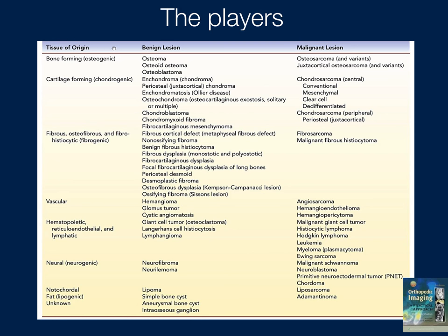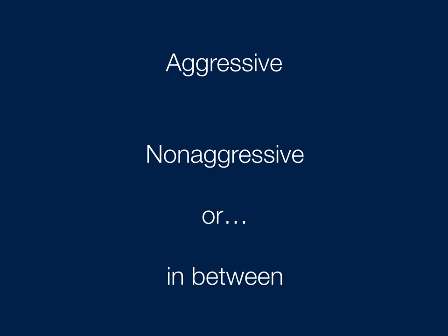Here's a list of lesions — you don't have to memorize these; it's a large list and you can expand it. What I recommend is learning a few of the more common ones, but instead of memorizing lists, you have to put a lesion into one of three categories: aggressive, non-aggressive, or in between.